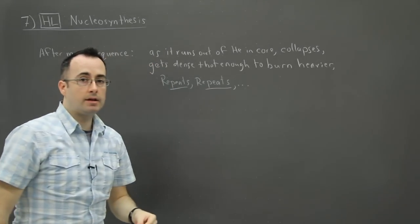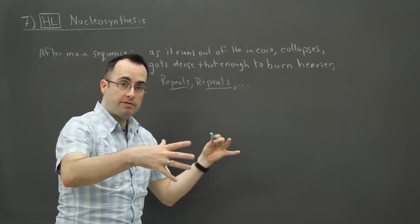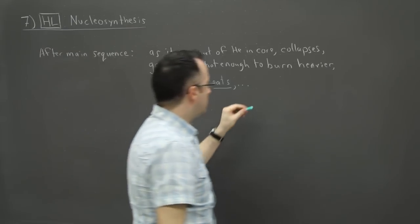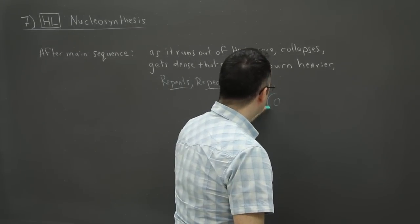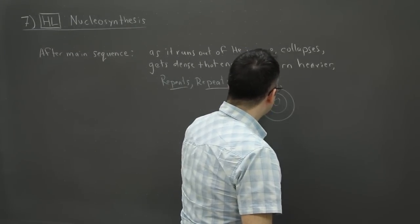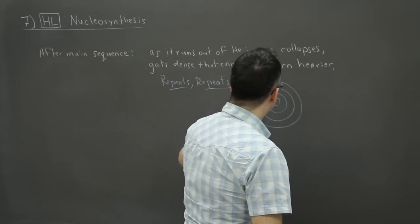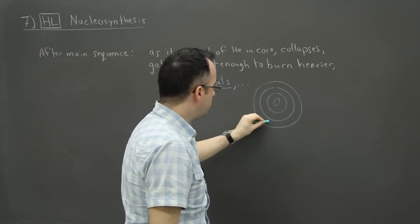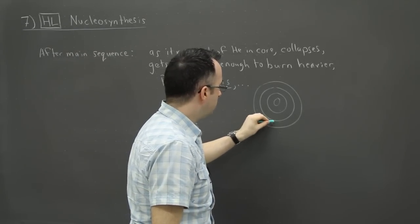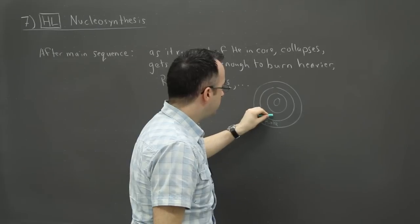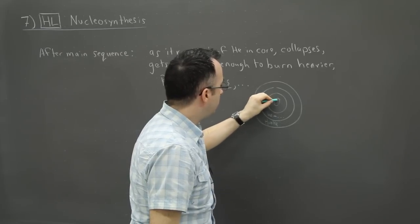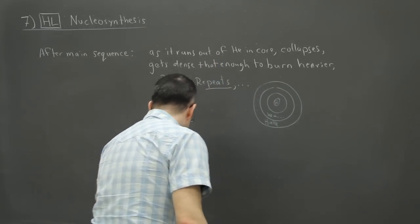So at some point then, the star is going to be left with a number of shells. Now this depends on how massive it is, but in the end it's going to have lots of different shells of different things right here that are burning. So your star itself is going to have lots of different things. So for example, there's still going to be some hydrogen to helium that's burning here. Here you can have some helium to other things. But in the end you're going to be left with just iron. This is the key thing here.